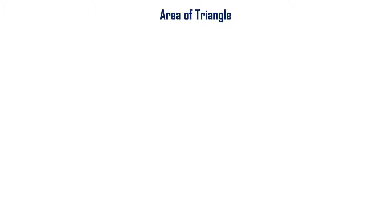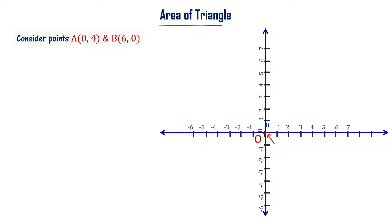Let us now learn how to find the area of a triangle given the coordinates of vertices of the triangle. We have a coordinate system originated at O, that is (0,0). The coordinates of the origin of the coordinate system are (0,0). I have two points: point A with coordinates (0,4), and point B with coordinates (6,0).